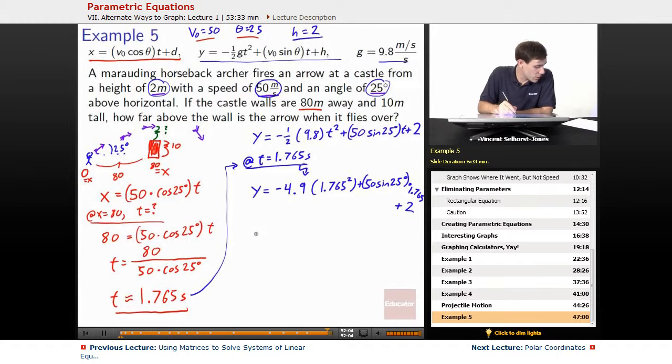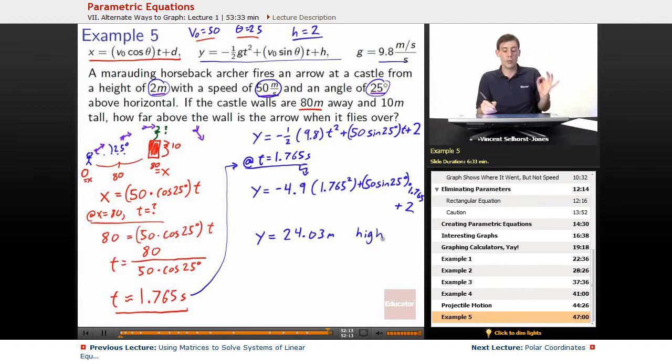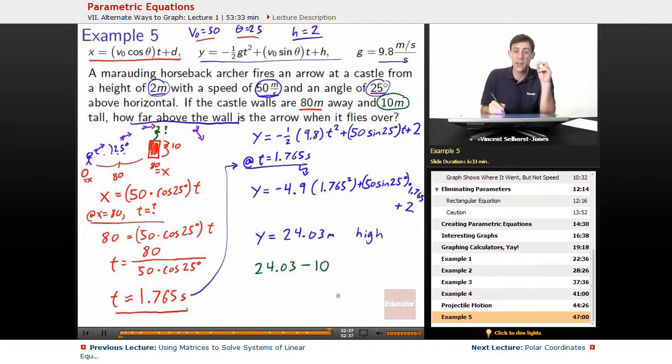The arrow is 24.03 meters high when it gets to the walls. However, that's not our answer. We were asked how far above the walls when it gets to it. So we take 24.03 minus the height of the walls, which is 10 meters tall. Minus 10 will give us the amount that is above the wall. So that comes up to be 14.03 meters above the castle walls when it flies over them.